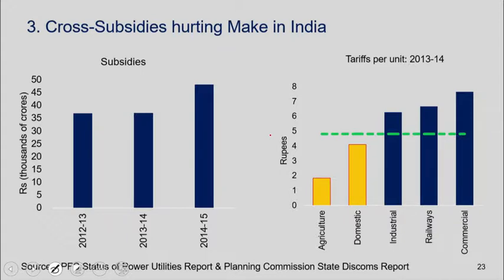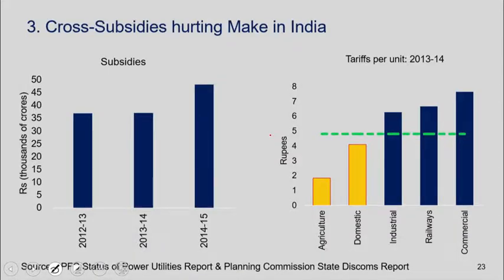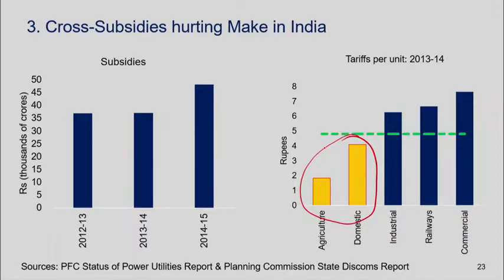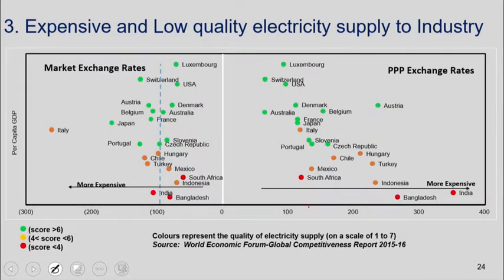Cross-subsidization can't be done fully because that would make industrial, railway, and commercial tariffs too high. So we end up both cross-subsidizing and making losses. Challenge one: complexity. Challenge two: losses. Losses arise because we try to meet social equity objectives by charging low prices for domestic and agricultural consumers — and in many states for agriculture this would be zero, like in Punjab. This chart shows a cross-country comparison of industrial tariffs, measured in megawatt-hours.